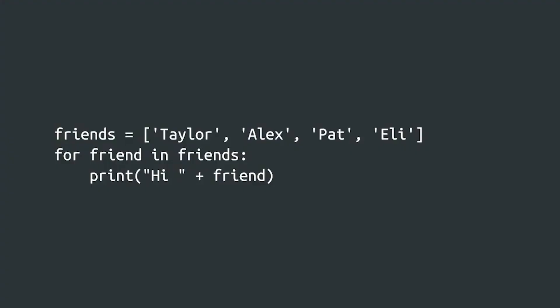Check out this example. There's a lot to unpack here, so don't worry if you don't understand it right away — we'll get into the nitty-gritty details later in the course. But even if you've never seen a line of code before, you might be able to guess what this code does. It defines a list with names of friends and then creates a greeting for each name in the list. Now it's your turn to make friends with Python. Try it out and see what happens.